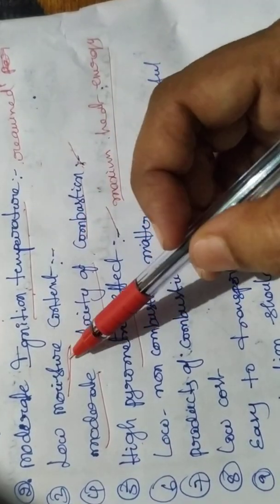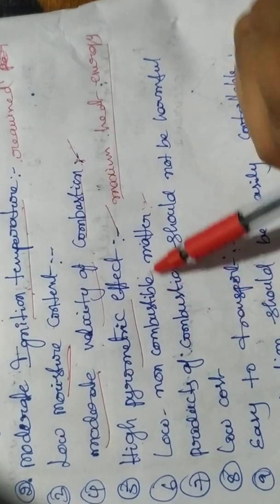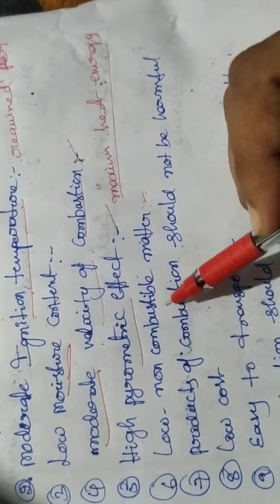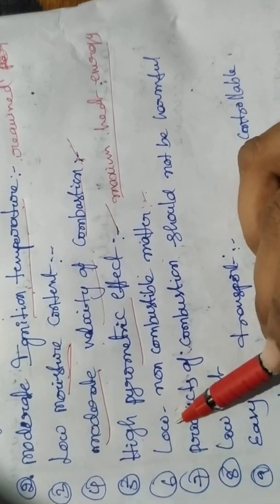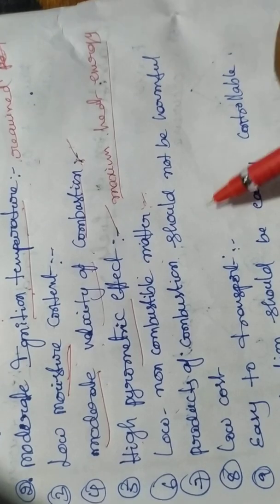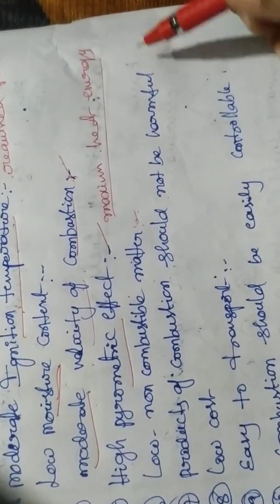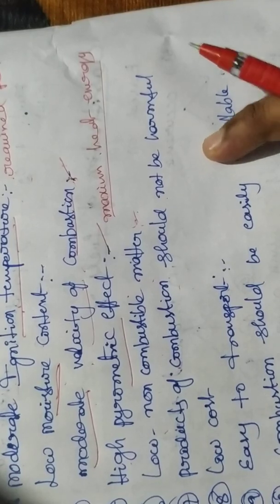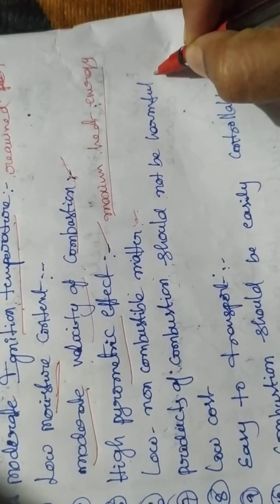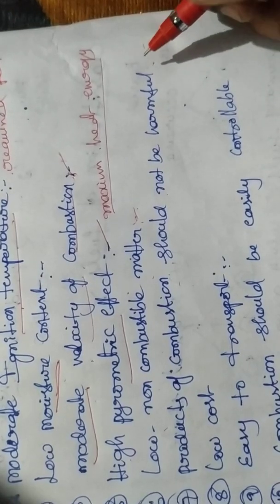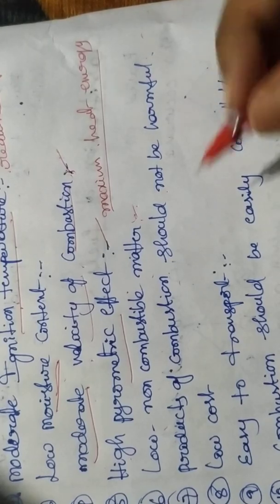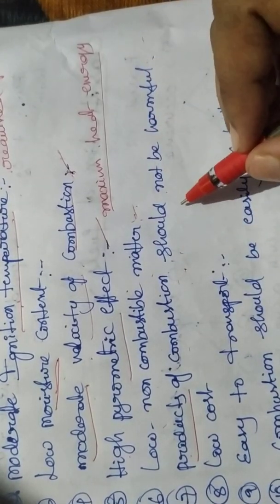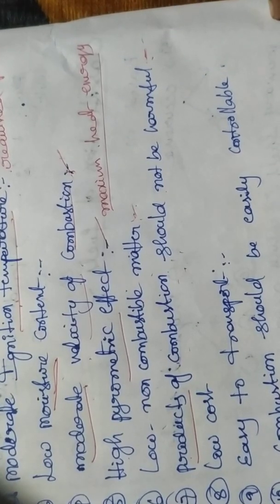The fifth characteristic is low non-combustible matter. Non-combustible matter refers to substances in the fuel that do not burn and remain as residue. Good fuel should have low non-combustible matter. Also, the products of combustion should not be harmful — when fuel burns, it produces gases like carbon dioxide, carbon monoxide, and sulfur dioxide, which pollute the environment.